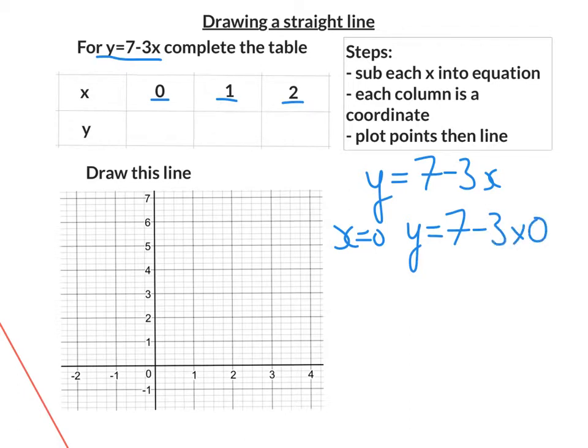Let's sub in x equals 0 first. So it's going to be y is equal to 7 minus 3 times 0. Now, I must do the multiplying first by BODMAS. So that is 3 times 0 is 0. 7 take away 0 is 7. So the first one is 7.